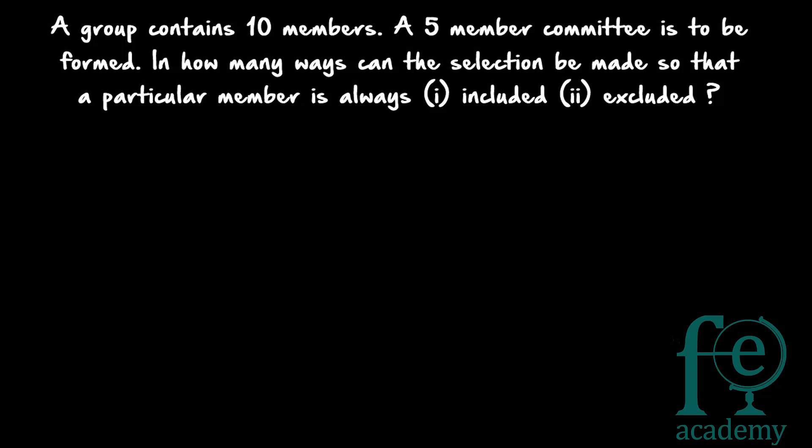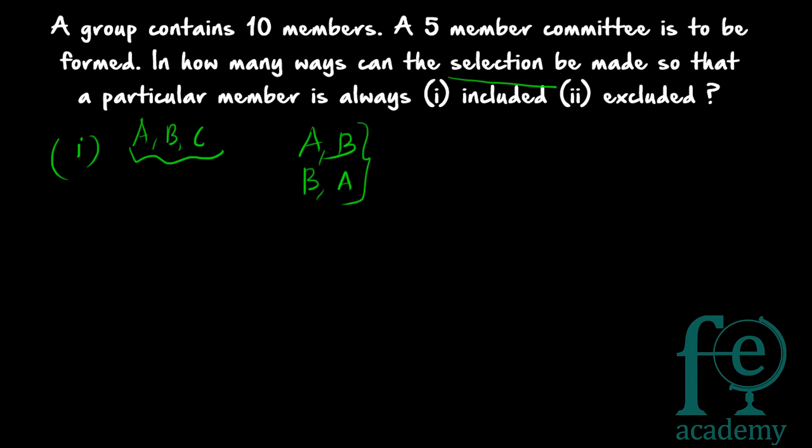A group contains 10 members, and 5 members are to be selected from this group. The first condition is a particular member is always included, and the second is always excluded. The important point to note is that this is a selection problem. If you select A then B, or B then A, both give the same committee — order does not matter. So this is a case of combination.